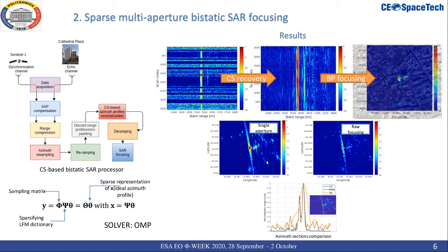In the right part of the slide we present our results. The first image represents the sparse azimuth profiles which are efficiently reconstructed using compressive sensing theory, and then using back-projection the final bistatic SAR image is obtained. For comparison, both the single aperture SAR image and the naive integration of the multi-aperture interval are also shown, together with an azimuth section from which we may notice that not only has the resolution become finer, but also the side lobes were suppressed.